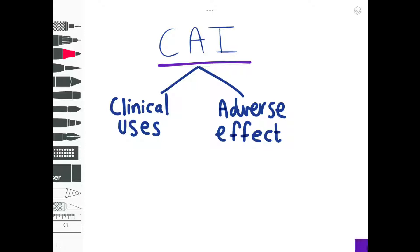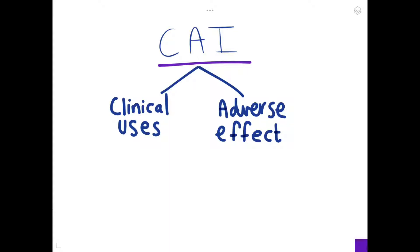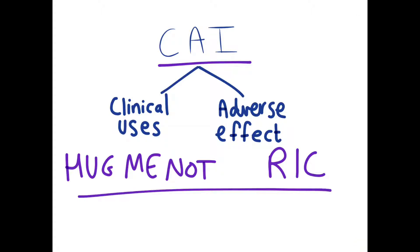So the mnemonic for the clinical uses is HUG ME NOT, and the mnemonic for the adverse effects is RIC. So the whole mnemonic is HUG ME NOT RIC, because Rick kind of sounds like a name.